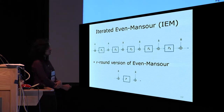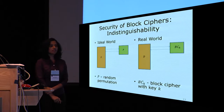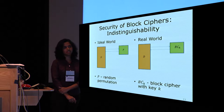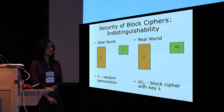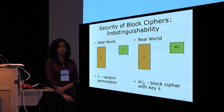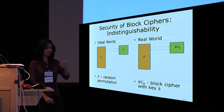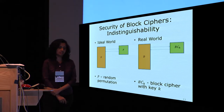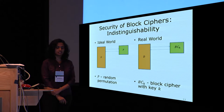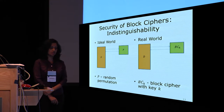The security of block ciphers is traditionally considered under the notion of indistinguishability. In the ideal world, the distinguisher D interacts with a random permutation P for which it can ask both forward and backward queries. In the real world, D interacts with a block cipher keyed with a fixed key k chosen uniformly from its key space.